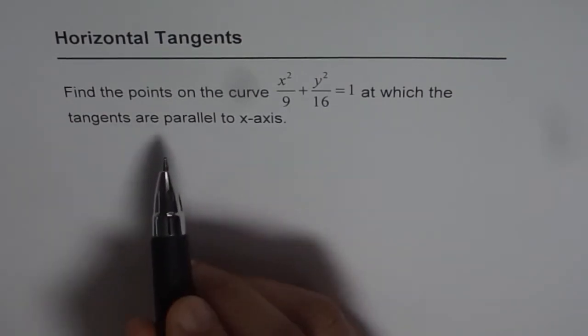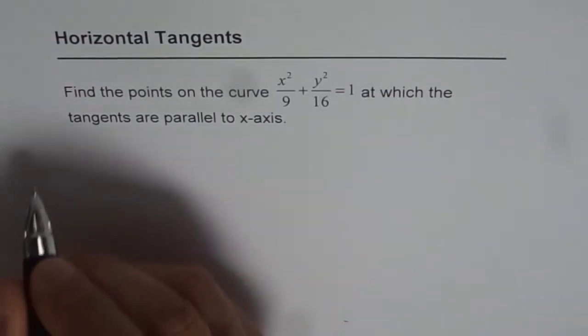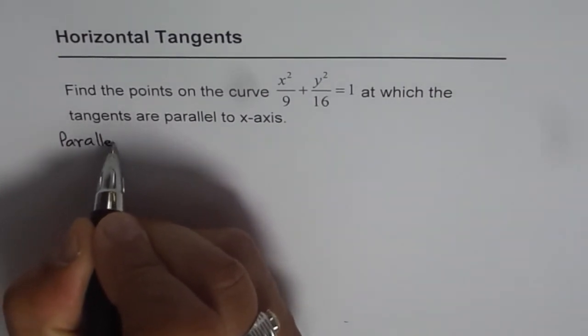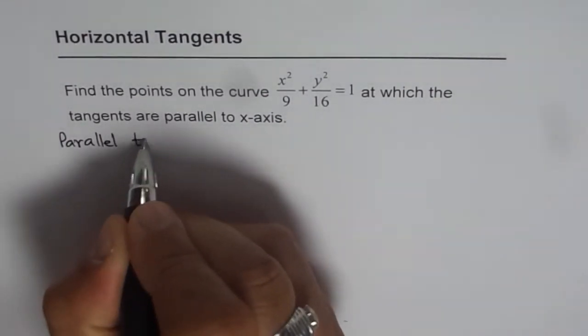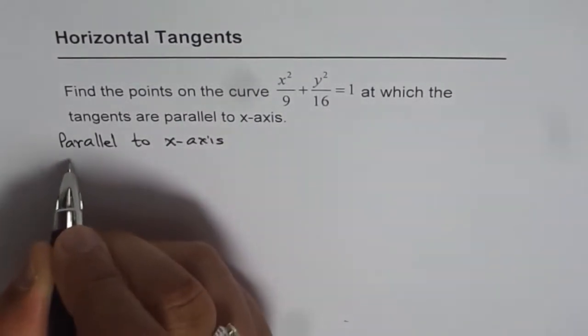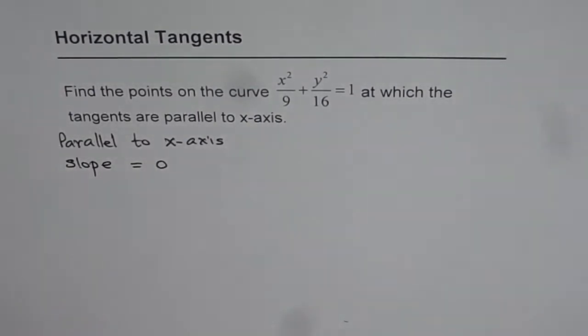Now when we say tangents are parallel to the x-axis, what does that mean? Parallel to the x-axis means the slope is 0. It's a horizontal line.